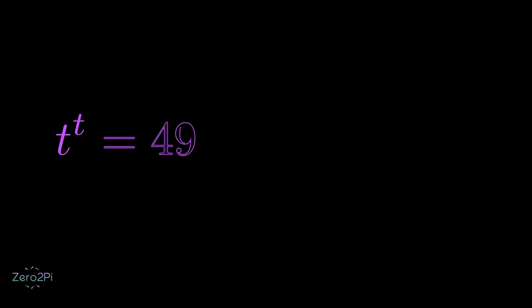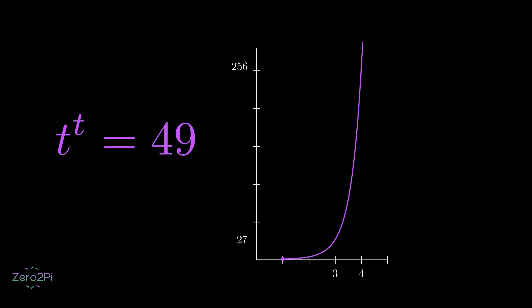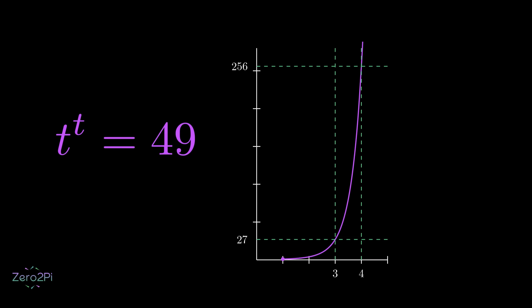Let's visualize this with a graph. If we plot function t to the power of t, you'll see it's an increasing function for a t greater than 1. The dotted green lines mark our boundary values. They show that our answer lies between 3 to the power of 3 and 4 to the power of 4.